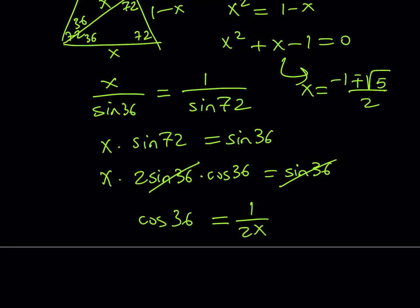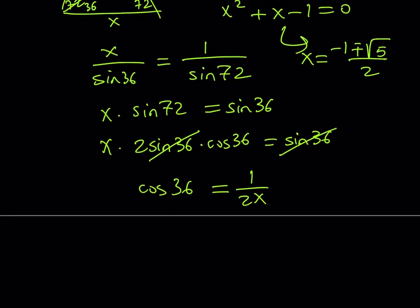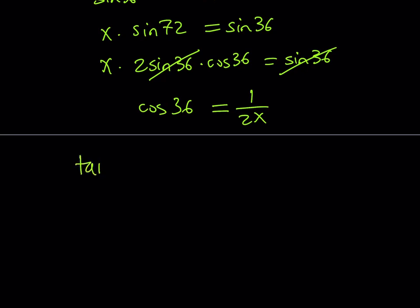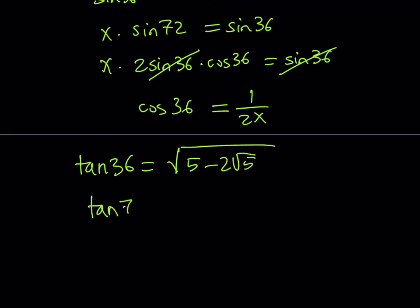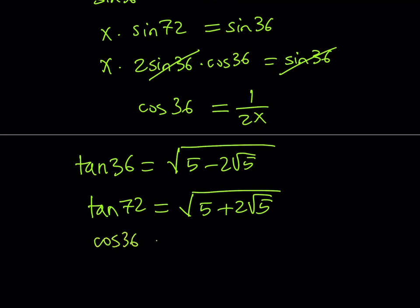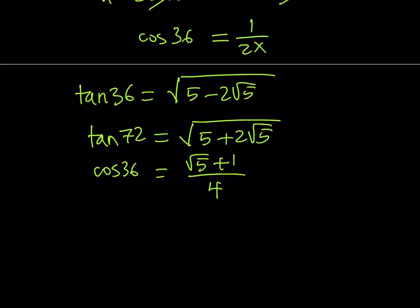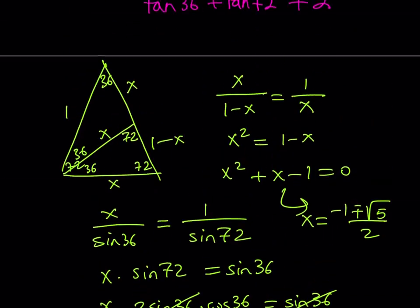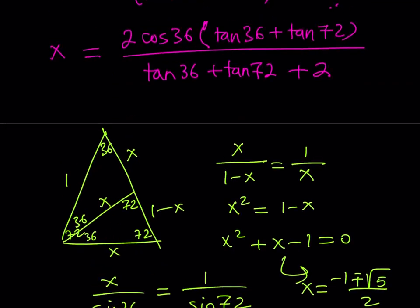Tangent 36 is equal to the square root of (5 minus 2 root 5). Tangent 72 is the square root of (5 plus 2 root 5). And cosine 36 is equal to (root 5 plus 1) over 4. We can also note cosine 72 equals (root 5 minus 1) over 4 — that's the golden ratio. Now we're going to put it all together: x equals 2 times cosine 36, multiplied by (tangent 36 plus tangent 72).